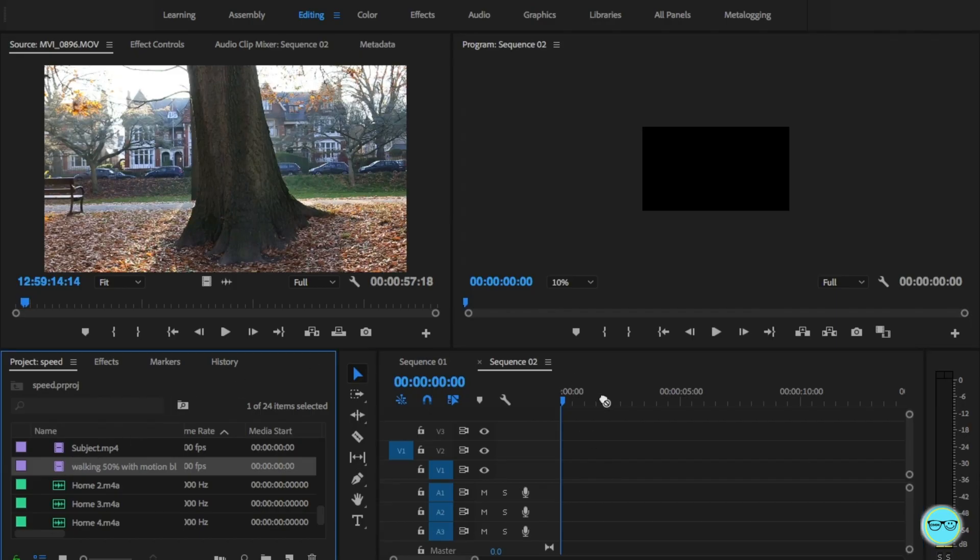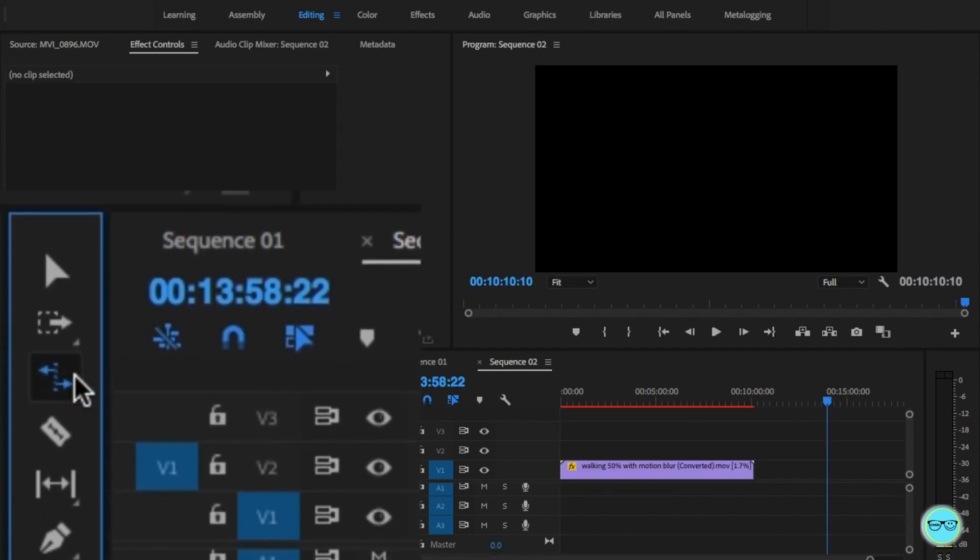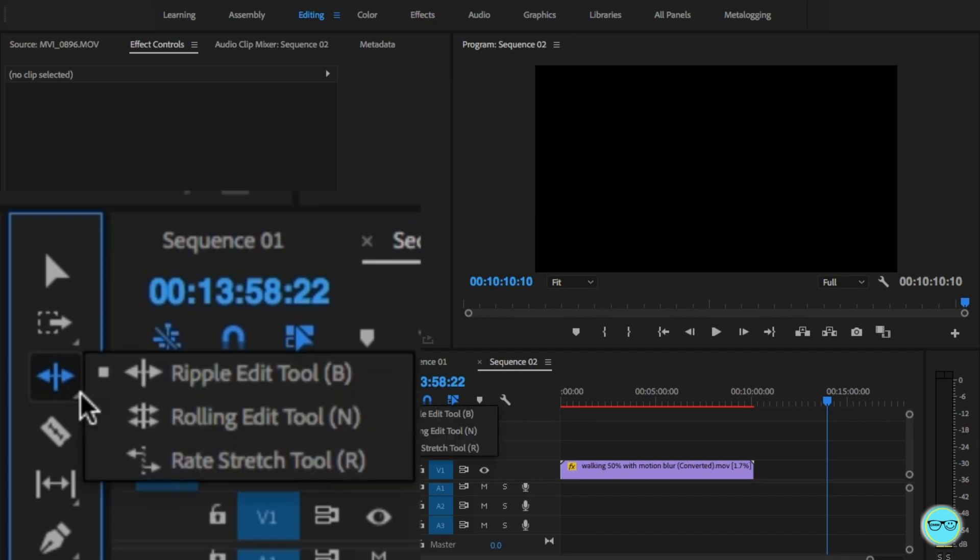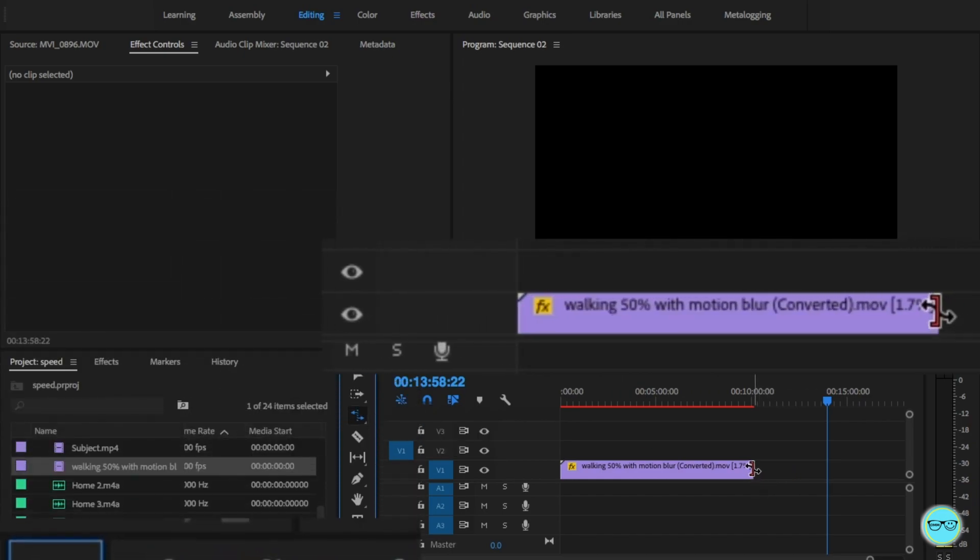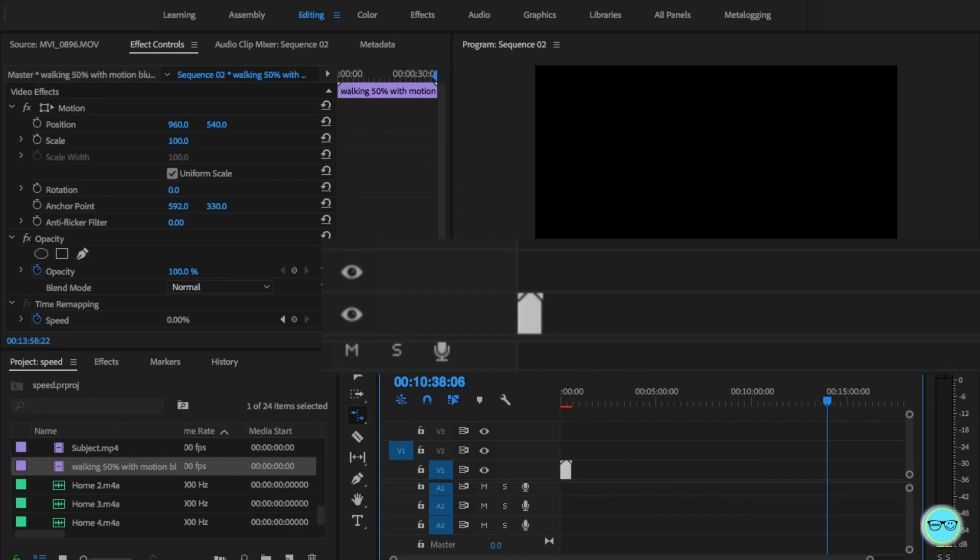Fire up Premiere Pro. Start by placing your fast forward shot onto the timeline. Using the rate stretch tool which you can find in your toolbox or by pressing R on your keyboard, we can click and drag the clip smaller. The rate stretch tool allows you to speed up or slow down the clip.